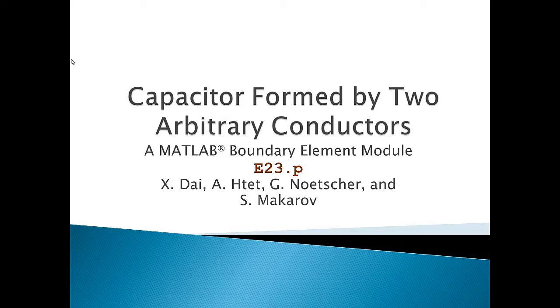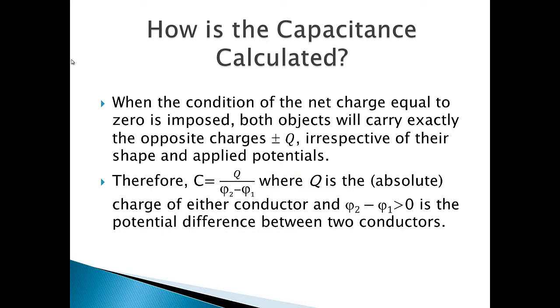Capacitance of such a capacitor is conventionally defined as the amount of positive electric charge of one conductor divided by the positive potential difference between two conductors, given that the net charge of the capacitor is exactly zero.